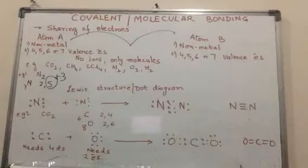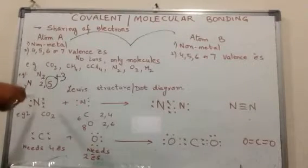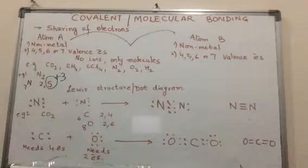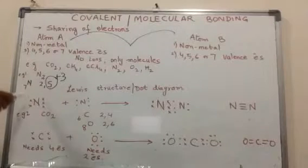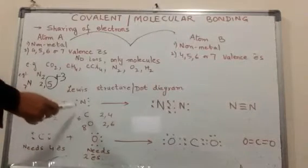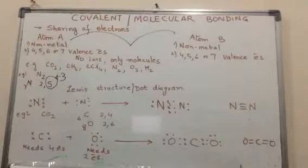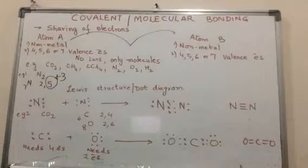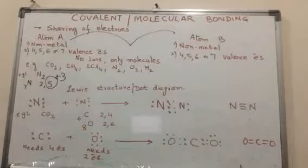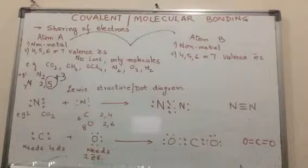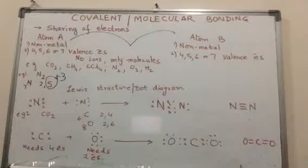We draw what we call a Lewis structure or dot diagram. I've represented electrons by different symbols. It doesn't mean the electrons are different in each atom—it's simply a symbolic way of representing the nitrogen atoms differently.